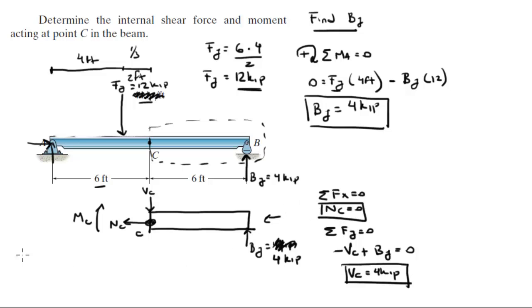And last but not least, the sum of the moments at C is equal to 0. Let's assume clockwise is positive, which means that the moment at C minus the moment created by BY, which is BY times 6, because the distance from C to BY is 6 feet given right here, and all of that is equal to 0. So if you solve for the moment, you get that the moment is equal to 24 kilopounds per foot going clockwise.